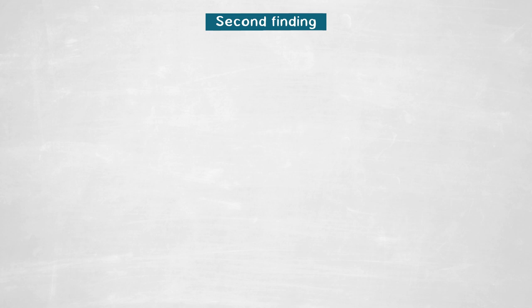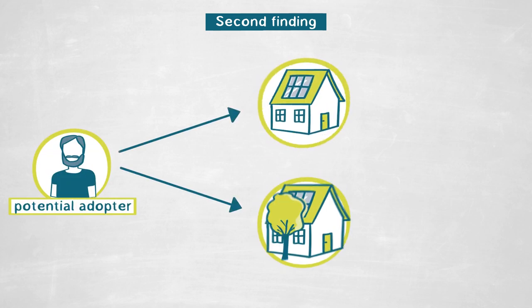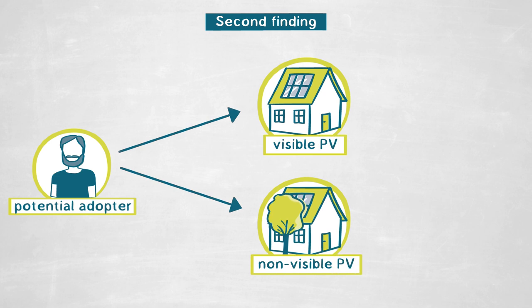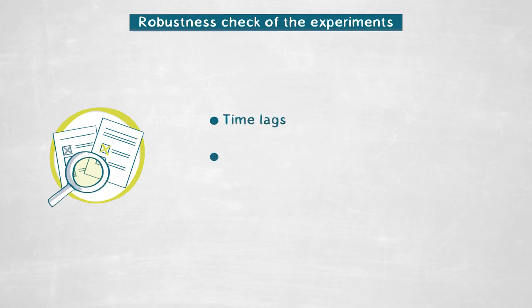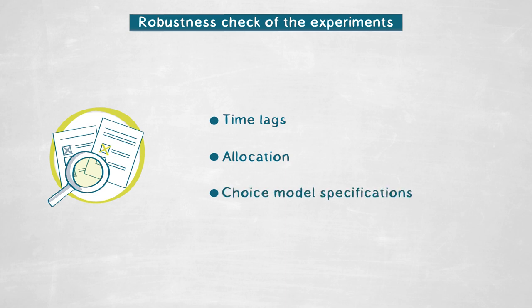Second, we were interested in the difference between visible and non-visible PV systems and the corresponding peer effects. We found that the probability of adopting or installing a PV system is increased by visible PV systems eight times more than by non-visible PV systems. We performed a series of robustness checks, considering different time lags, randomly allocating PV systems to household locations to control whether the measured effect is by construction or accident, and different model specifications including linear probability models, logit, and hazard models. All confirmed our main finding that a visible PV system is eight times more influential than a non-visible one.